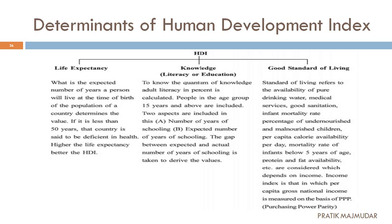The third determinant is good standard of living. This includes: availability of pure drinking water, medical services, good sanitization, infant mortality rate, malnutrition among children, and per capita calorie availability per day. On the basis of these factors, we calculate PPP — Purchasing Power Parity — when measuring standard of living.